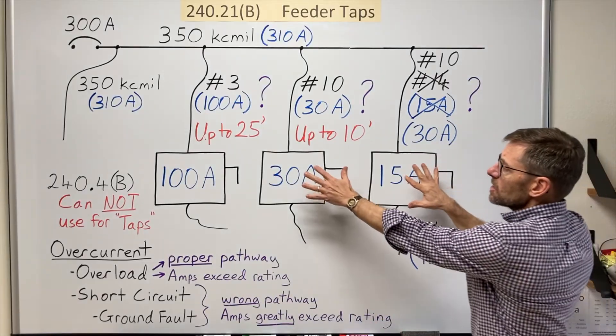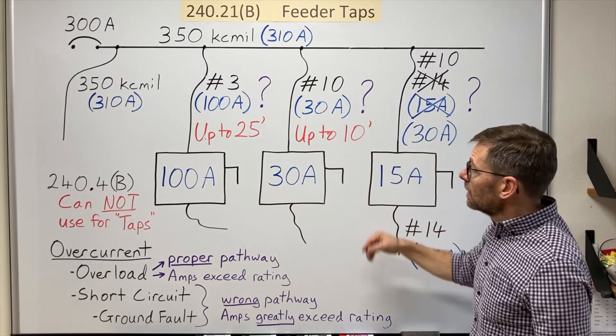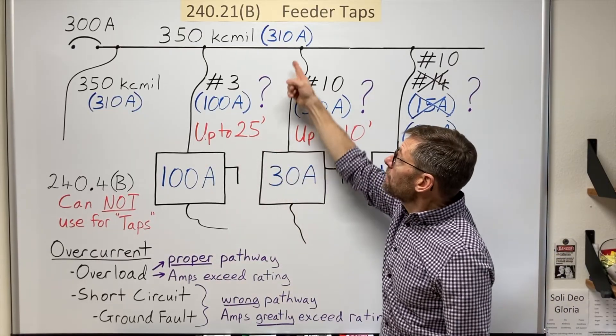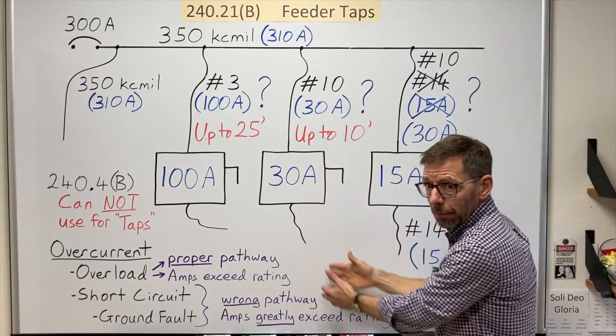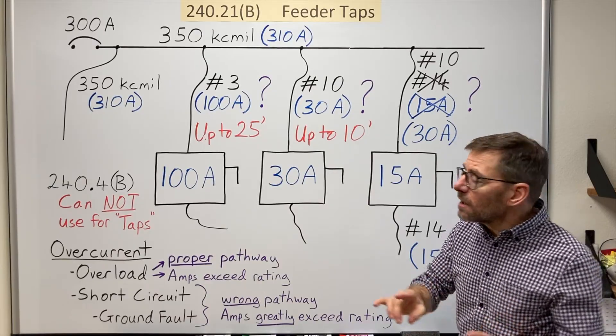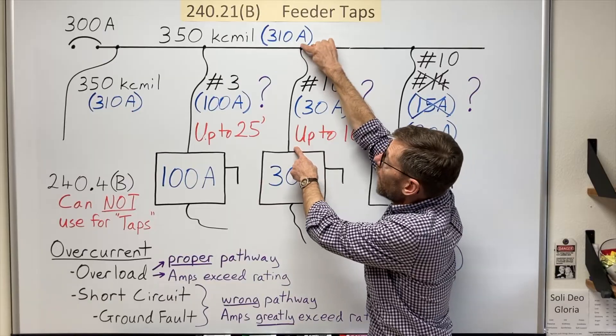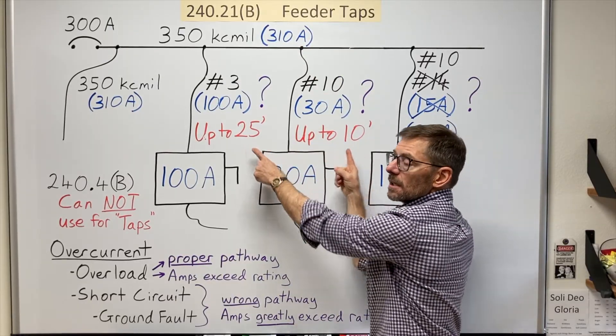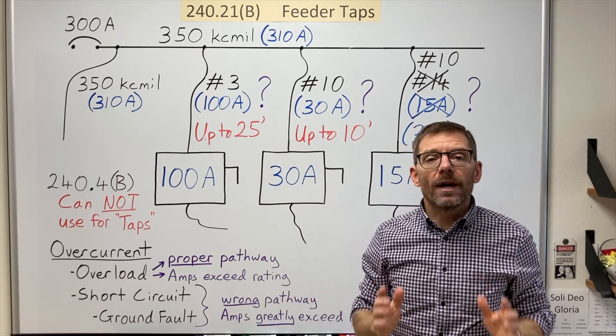Now what if I want to take these smaller ones and run them longer than ten feet? Well then I would have to use the twenty-five foot rule. And upsize this to at least a number three. And after this device I could drop them back down again. And while I'm talking length, don't get confused into thinking you can put in a ten foot stick of conduit here. You'd have wires sticking out the top and out the bottom. These lengths deal with the conductor, not the raceway.